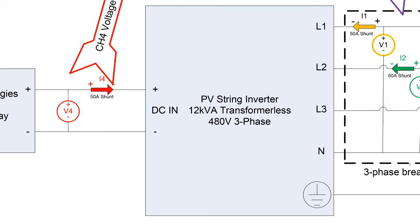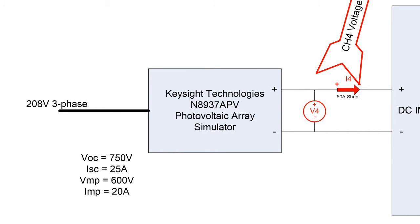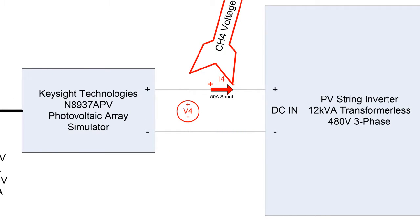The input is normally supplied by a solar array. We'll be simulating that with the N8937 APV, which is sourced by 208 volt three-phase input which then generates the DC input to the inverter.